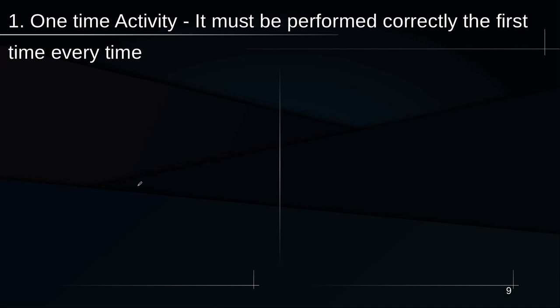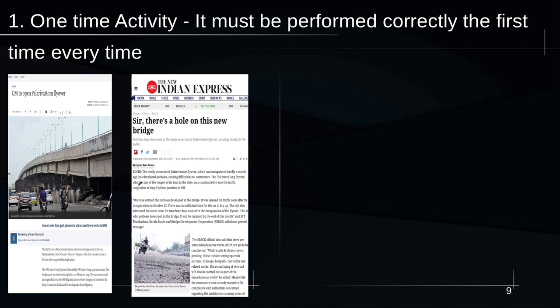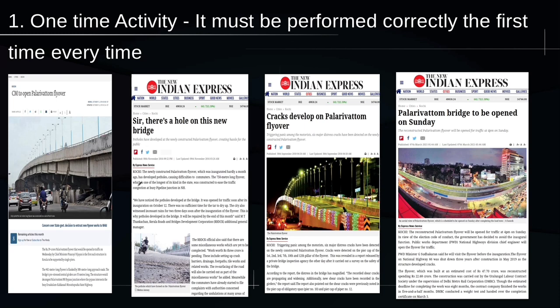Here is a 2016 newspaper clipping where the Pallariotum flyover was inaugurated. Within a few months, there were reports of potholes in the flyover, and within two years, reports of cracks developing. A 2021 clipping shows the Pallariotum bridge being reopened after reconstruction. Which other industry would gain this much public attention for not performing an activity correctly the first time?